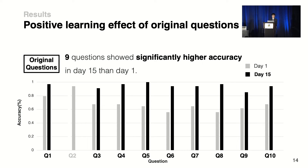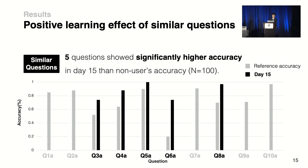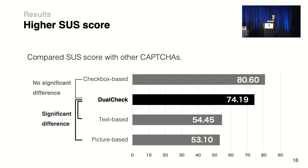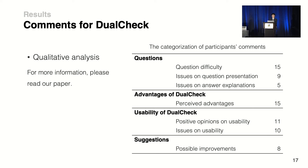Looking more deeply at each question's accuracy, nine out of ten original questions showed higher accuracy on day 15 than on day 1. For the similar questions asked only on day 15, five questions showed higher accuracy than general user accuracy. We also analyzed usability via SUS scores: Dual Check scored significantly higher than text-based and picture-based CAPTCHAs, and was comparable to checkbox-based CAPTCHAs with no significant difference.